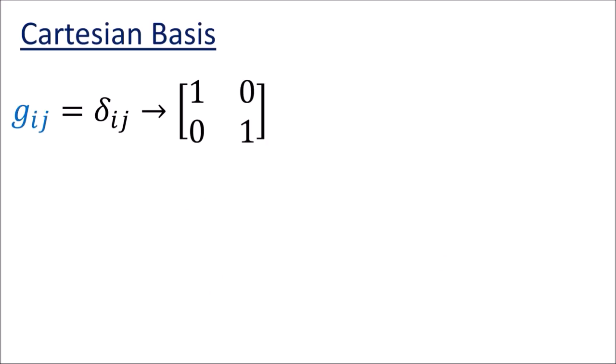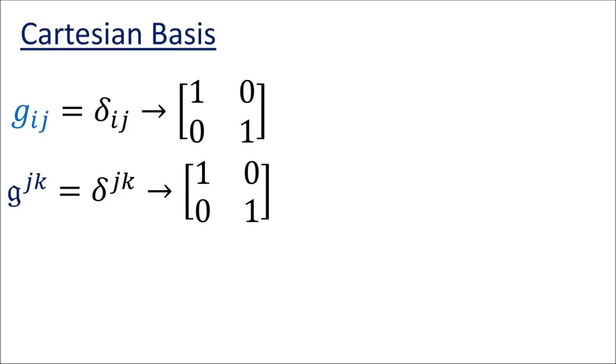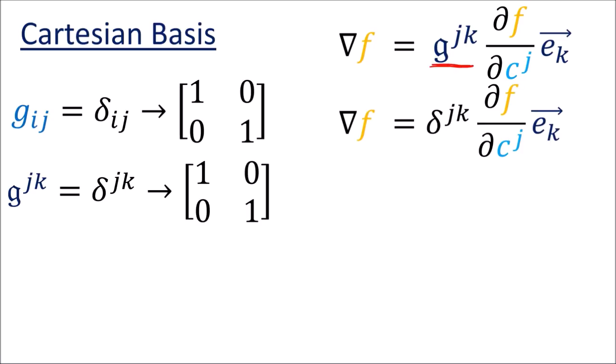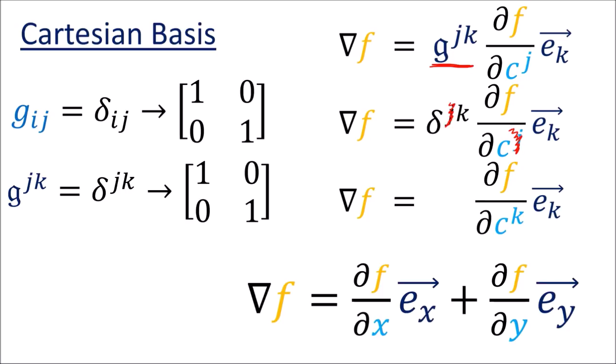In the Cartesian basis the basis vectors are orthonormal, so the metric tensor components are just the Kronecker delta, which is like the identity matrix. That means the components of the inverse metric tensor are also the Kronecker delta, also giving us the identity matrix. So if we use this formula for del f, the inverse metric tensor just becomes a Kronecker delta, we use the cancellation rule to cancel the j's and get k, and writing out the summation over k explicitly we get our familiar formula for the gradient in Cartesian coordinates.